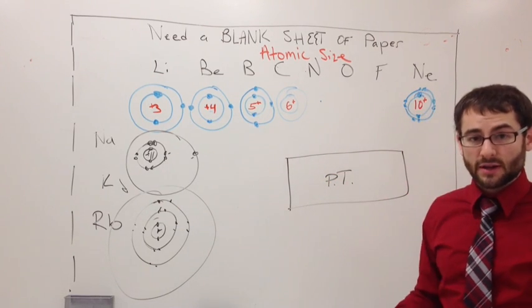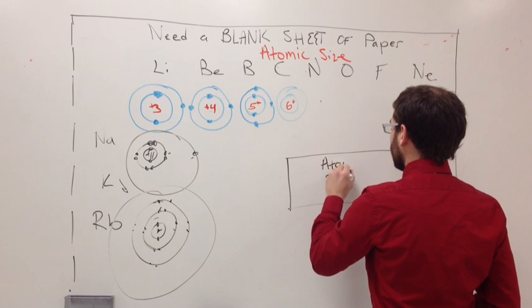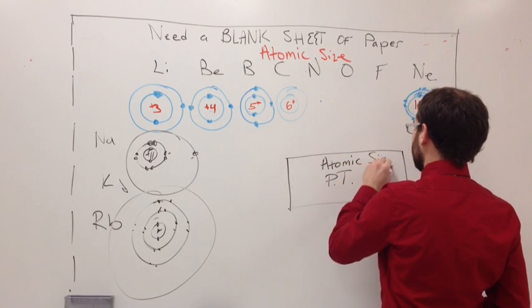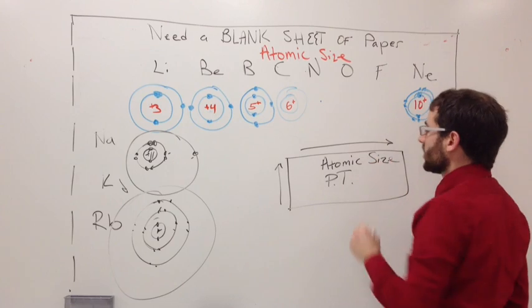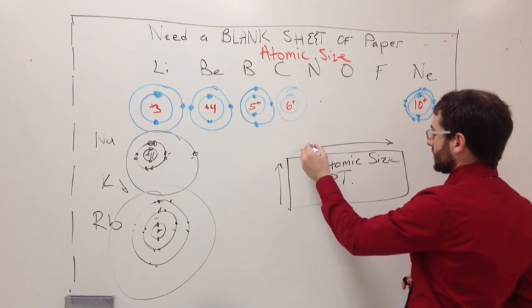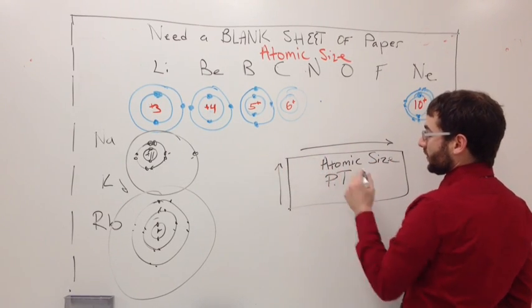Alright, so here's our periodic table. We're talking about atomic size. And then if you draw an up arrow and then an arrow across, all you have to do is label these things or remember what these lines mean.